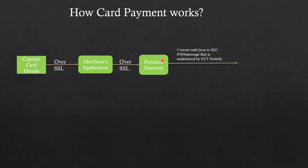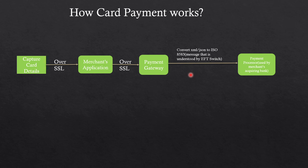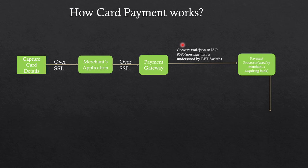The payment gateway receives the message in XML, JSON, or whatever format the merchant uses, and converts it into ISO 8583 format — the standard understood by EFT switches. This is then sent to the payment processor, which is used by the merchant's acquiring bank. In most cases payment gateway and payment processor are used together, though they can be separate entities.